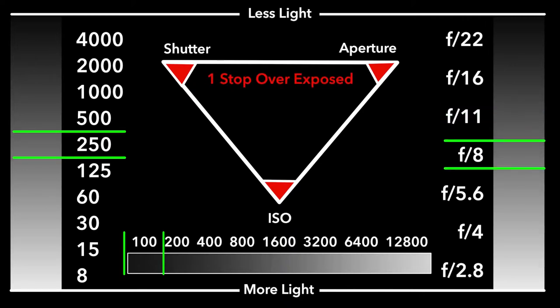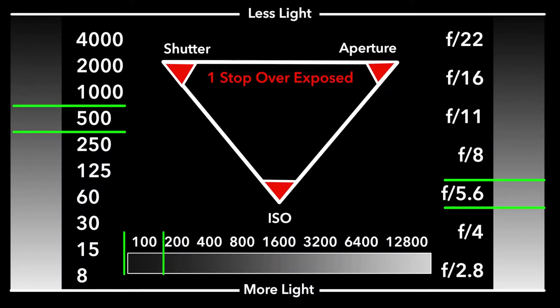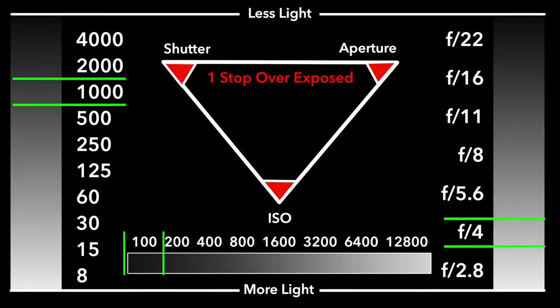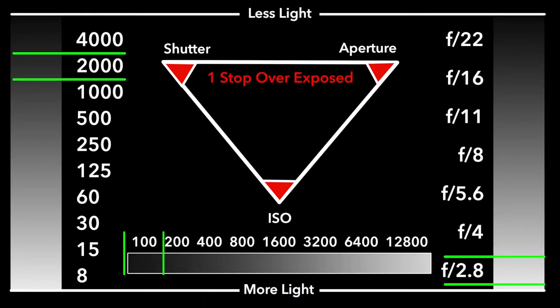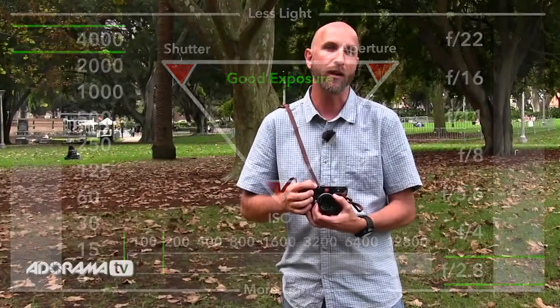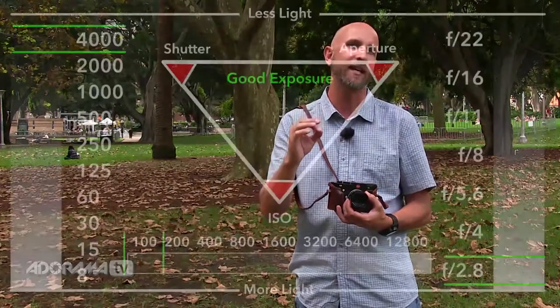I'll go to f8, now things are out of balance. To balance that out I'll go to a shutter speed of 500. So every time I move the aperture by one stop — let's go to f5.6 — I need to move my shutter by one stop, so we'll go to 1000. F4 goes to 2000 on my shutter, finally f2.8, I'm now at 4000. So every time one thing moves by one stop, something else has to move by a stop up or down to keep our exposure set perfectly.